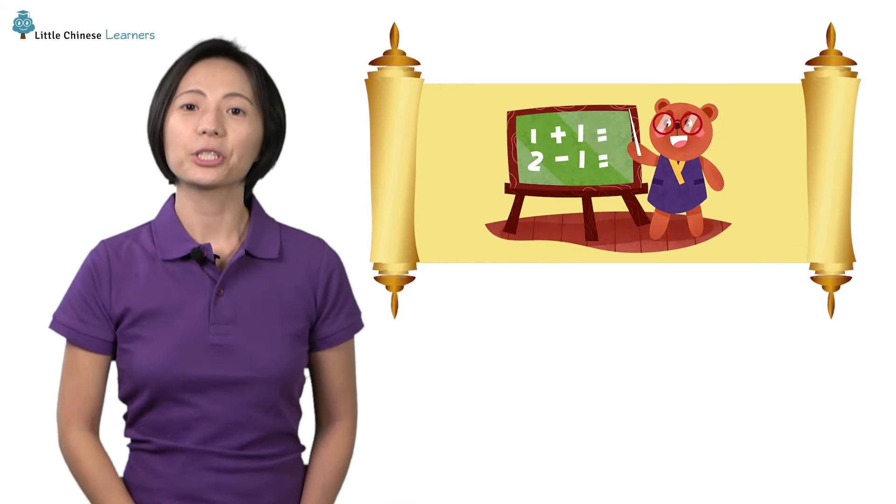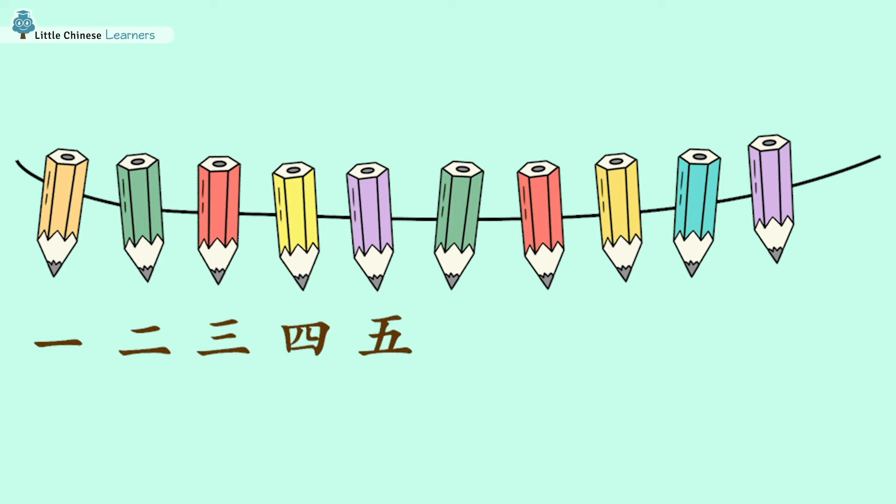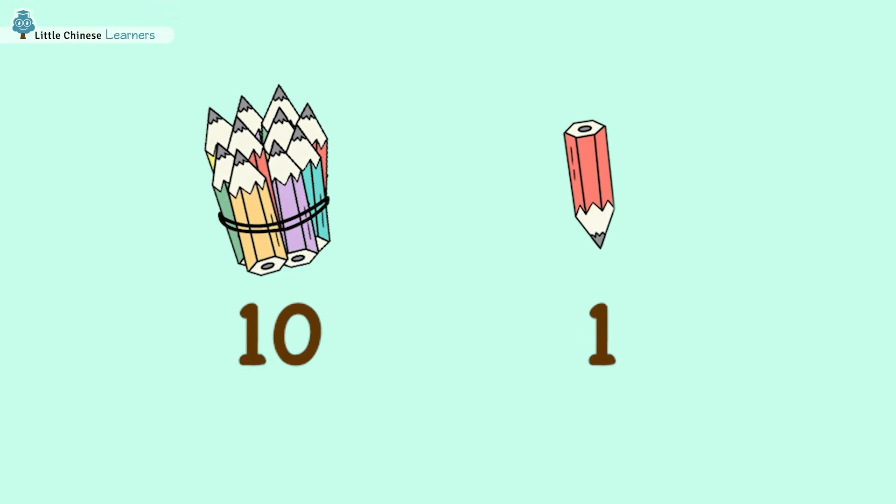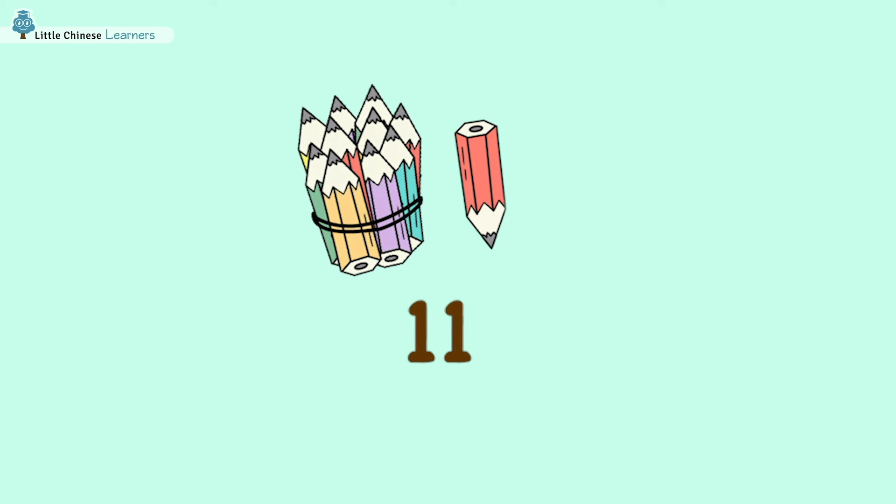To make bigger numbers in Chinese, all we need is some basic math. You see, here I have 10 pencils. But wait, I've got more. What's 10 plus 1? 11. Since 11 is 1 more than 10, in Chinese we just put 10 and 1 together to make 11.